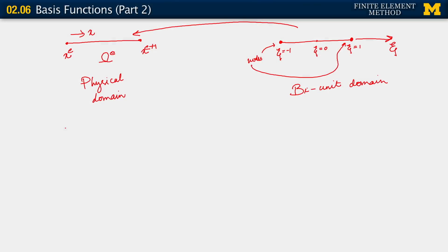We always think of our actual physical element as being constructed from a mapping, as a mapping from our bi-unit domain. Why do we do this? We do this because it becomes very convenient to define things like our basis functions and later on to carry out integrations if we have this idea of the bi-unit domain.